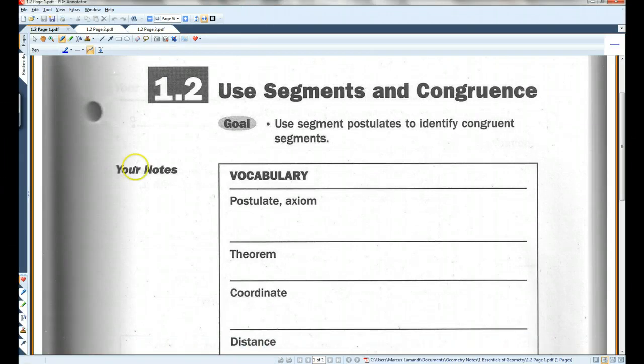Postulates and axioms - these are rules that are accepted without proof. They're just facts that people accept even though there is no proof for them. On the contrary, a theorem is a rule that can be proved.